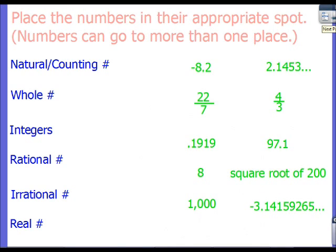All right, so let's look at this. So now, what we want to do here is we want to group these things where they best go. So they can go in more than one place. So negative 8.2, we know that that's a real number, because that's a number. So every single thing up here will be a real number. But negative 8.2 can also be a rational number, because it's a decimal that stops.